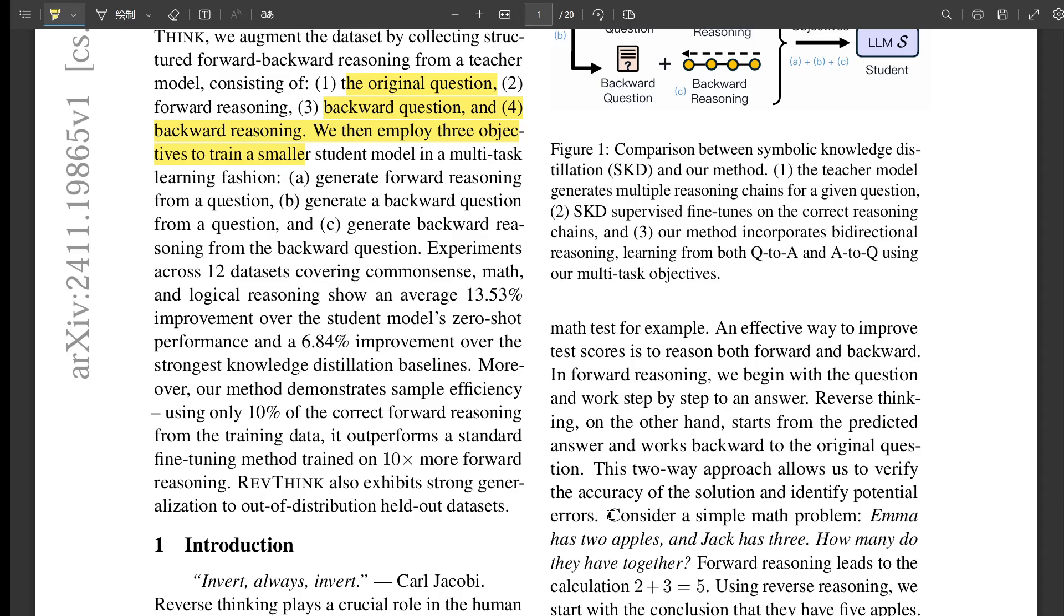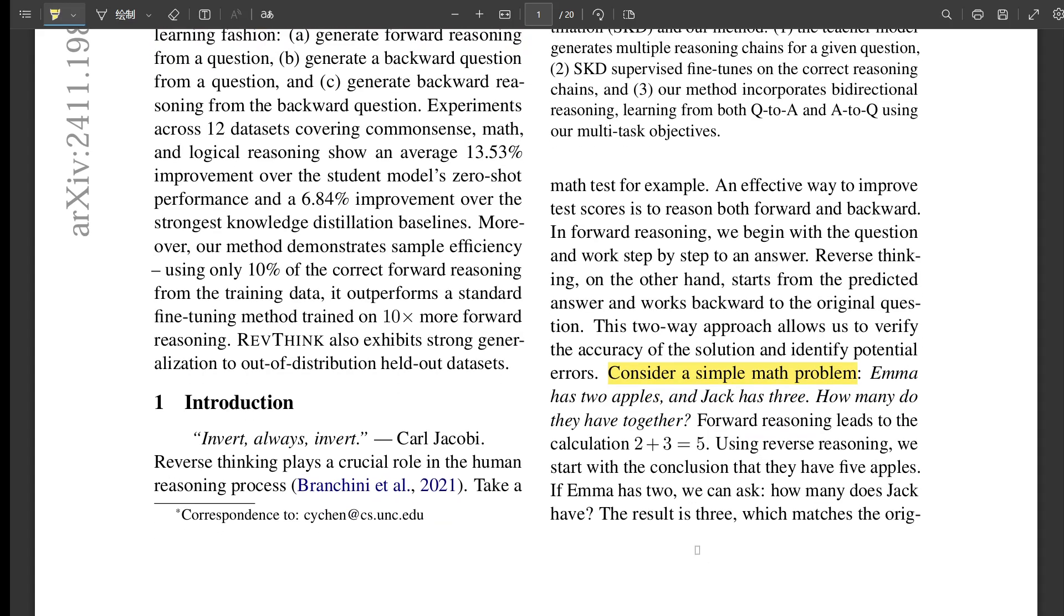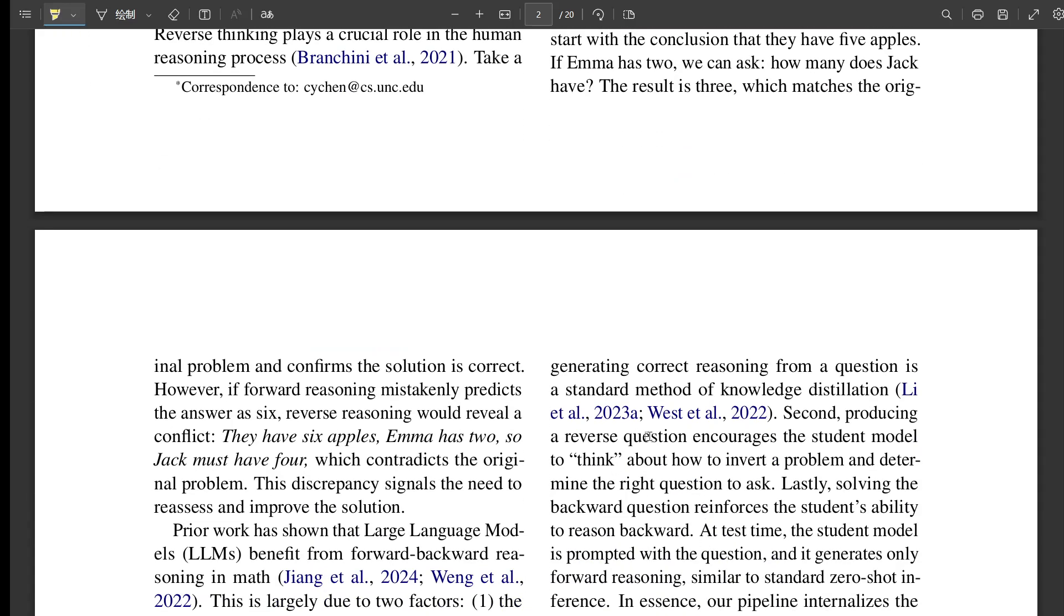How do they know the teacher model is giving them good information? AI isn't perfect, right? That's an important point. They actually have this whole filtering process. They only keep the new data if the forward and backward reasoning all line up perfectly. They get rid of anything that doesn't make sense. No flawed logic allowed.